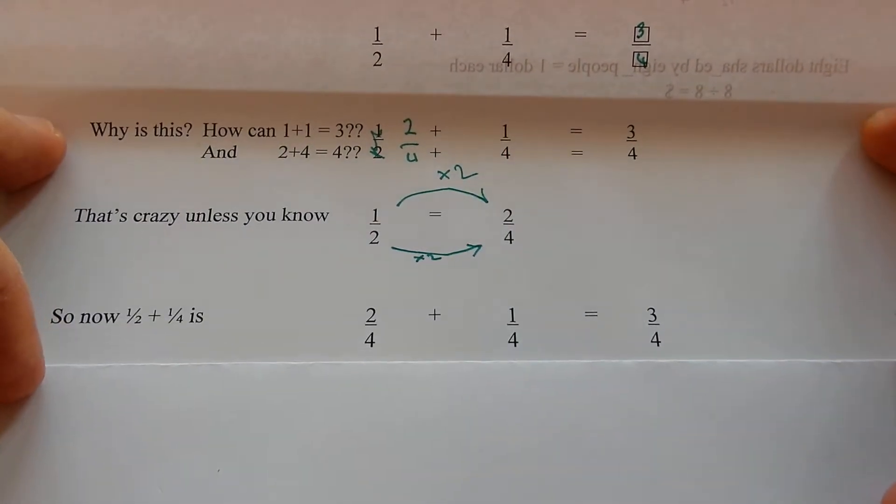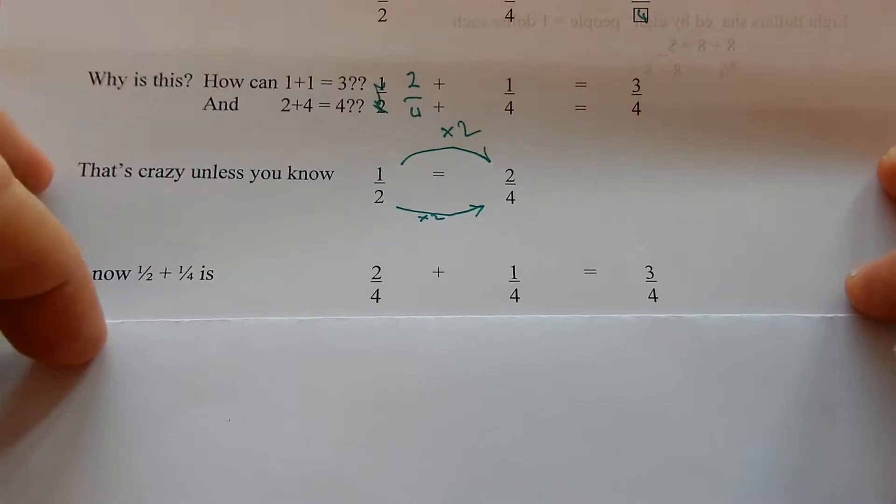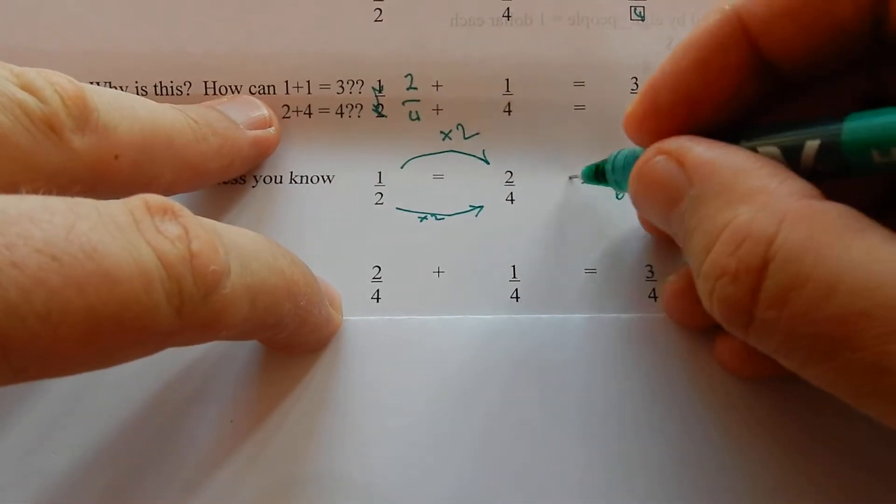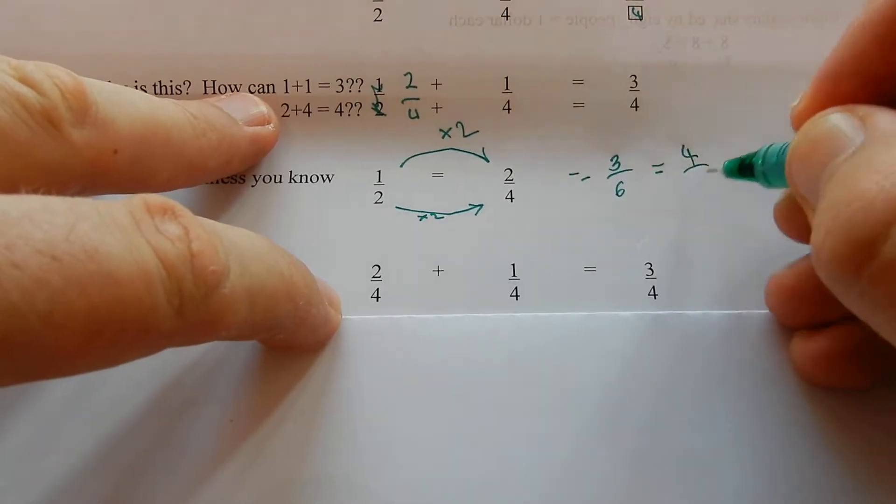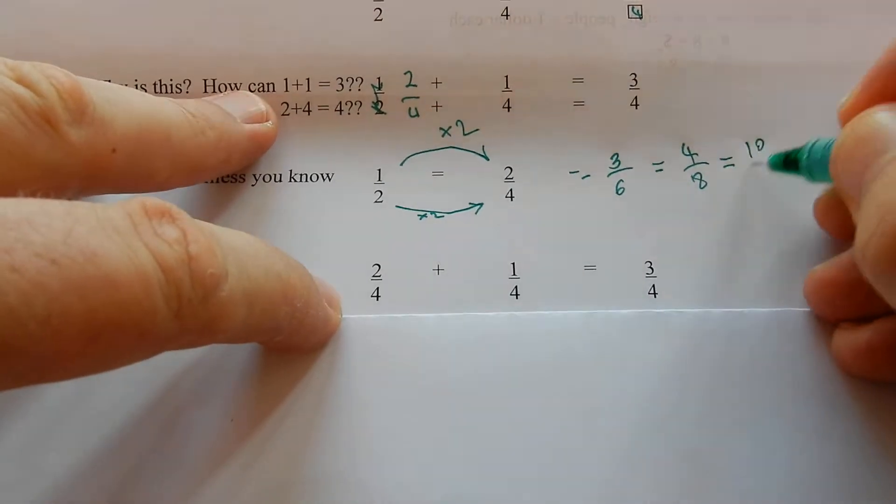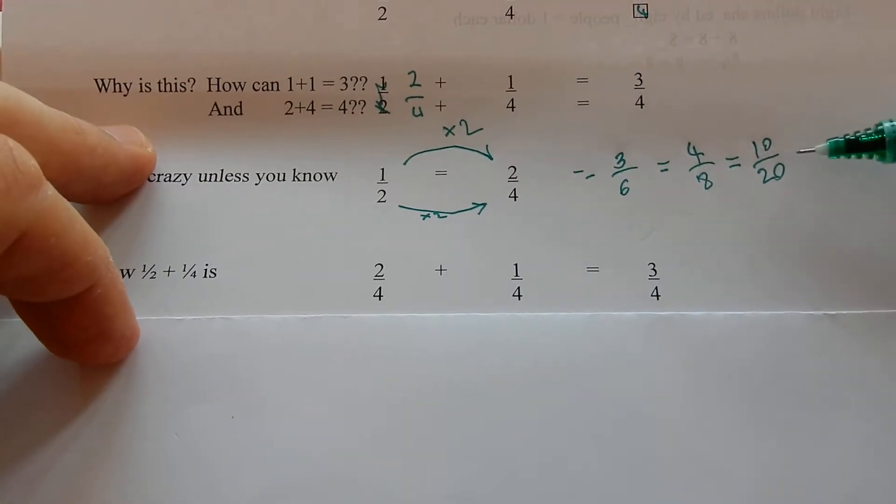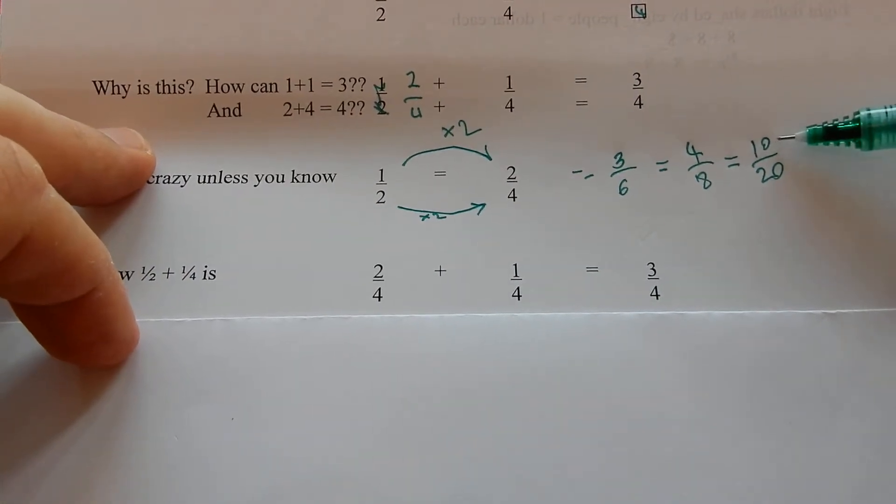Lots of different fractions are equal to a half. Things like three sixths is equal to a half, and four eighths is equal to a half, and ten twentieths. Anything where a half is on the top half. What's on the bottom is halved to make the other thing on the top.